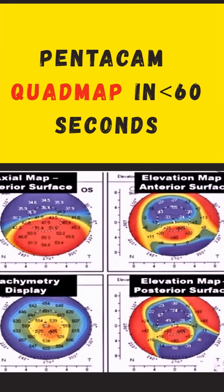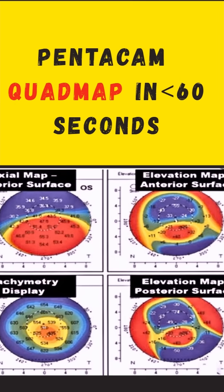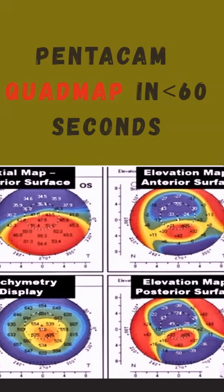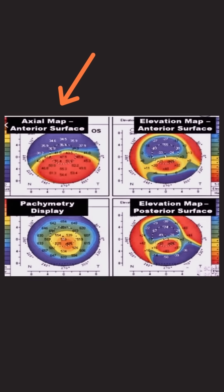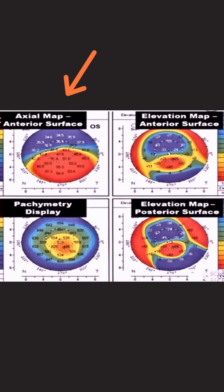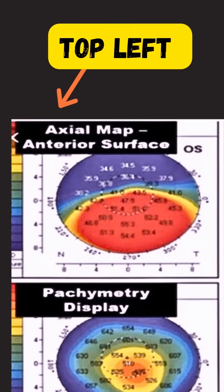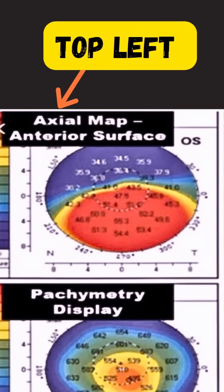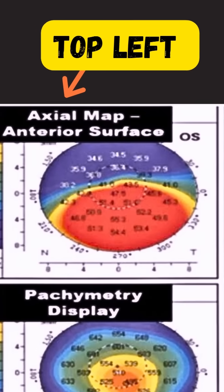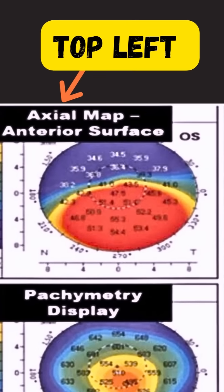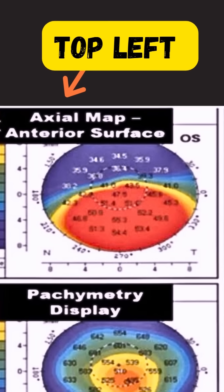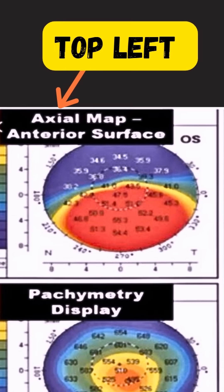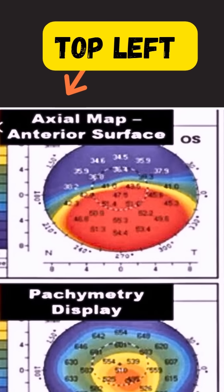Do you want to learn about the Pentacam quad maps in less than 60 seconds? Four important maps in one snapshot. Top left is the anterior axial map. It depicts the curvature of the front corneal surface in diopters. Think of it like a topographic map — red is steep, blue is flat.